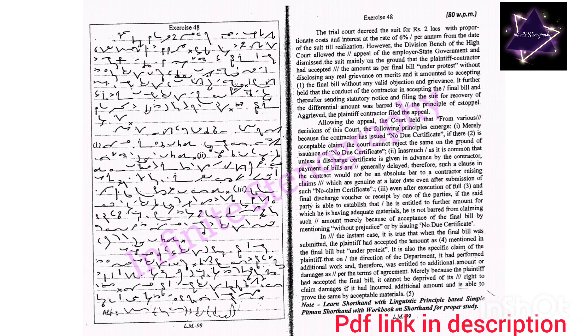Ready? Start. The trial court decreed the suit 4 rupees 2 lakhs with proportionate costs and interest at the rate of 6 percent per annum from the date of the suit till realization. However,